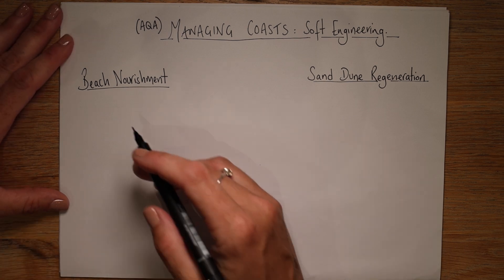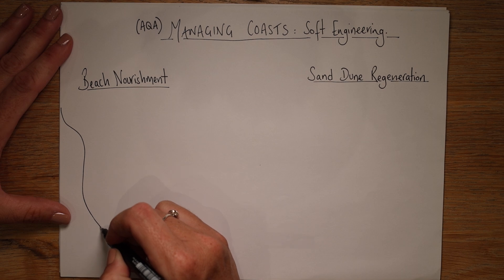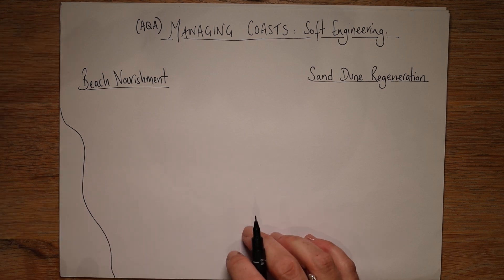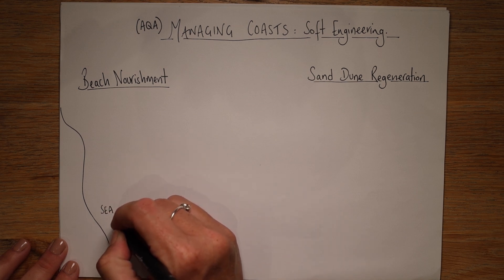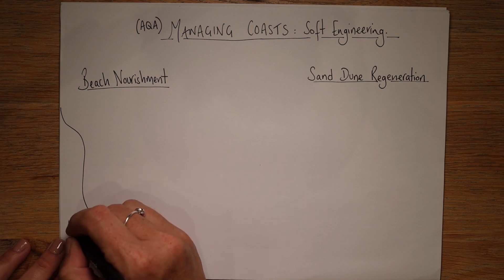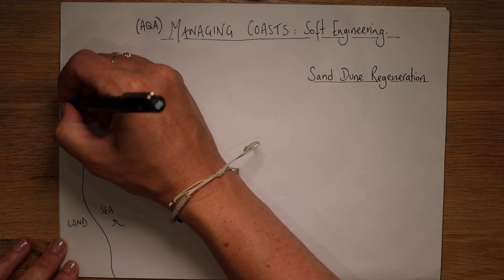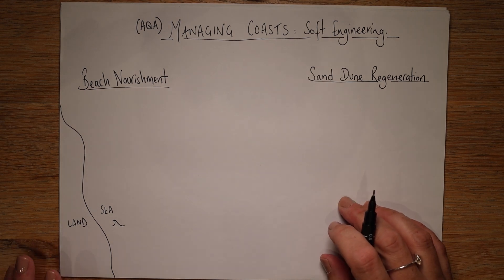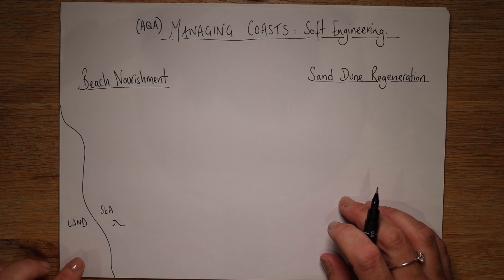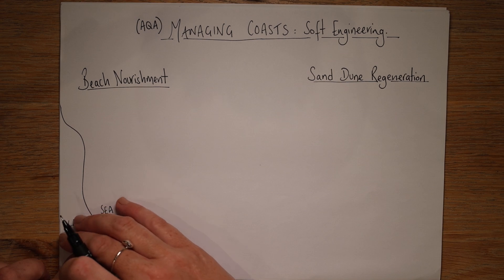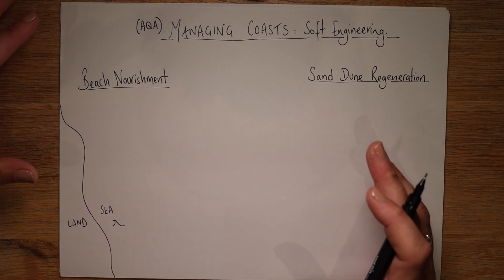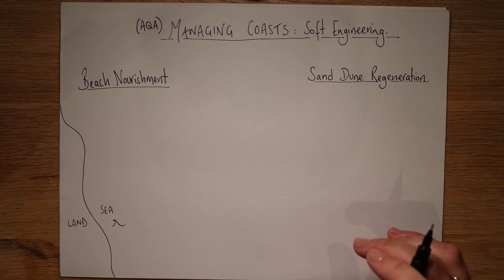So for beach nourishment, just draw a coastline — any sort of shape, doesn't really matter. This is the sea over here, and this is the land. What beach nourishment is, essentially, is adding material — like sand or shingle — back onto the land where the sea has taken it away through various types of erosion, with destructive waves being the main one.